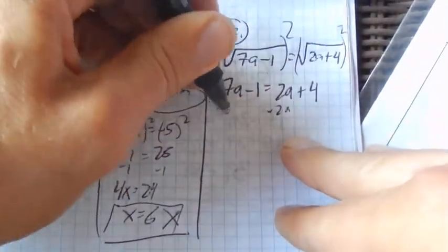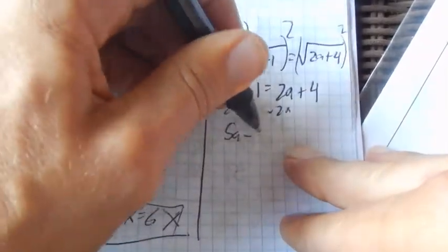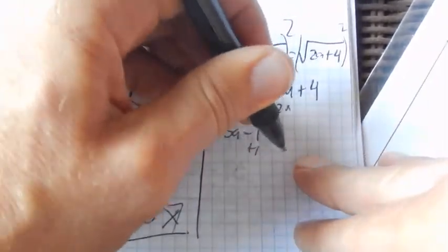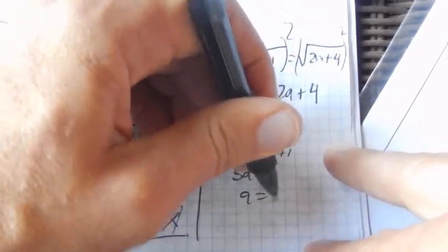Subtract 2a from both sides. 5a minus 1 equals 4, plus 1, plus 1. 5a equals 5, a equals 1.